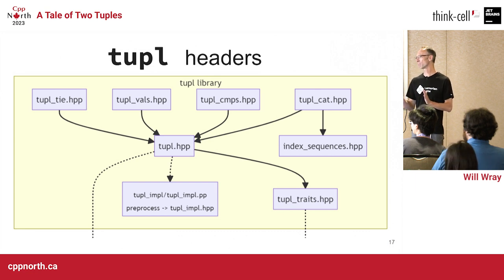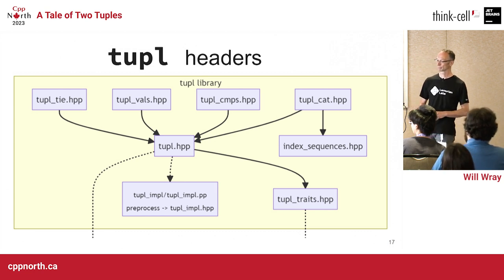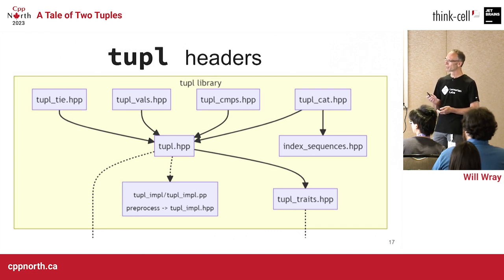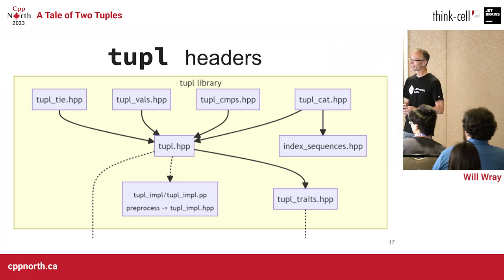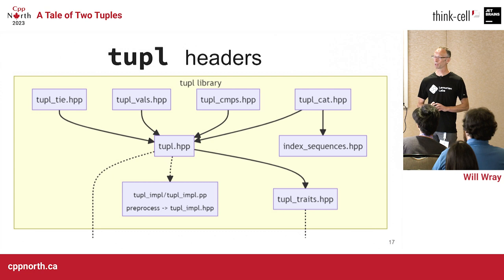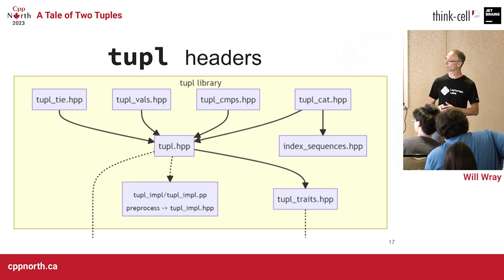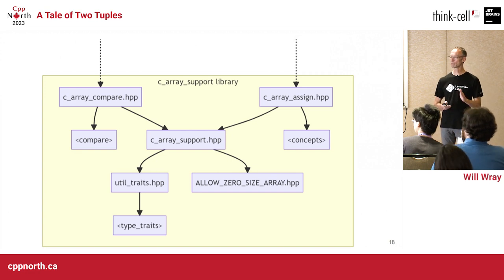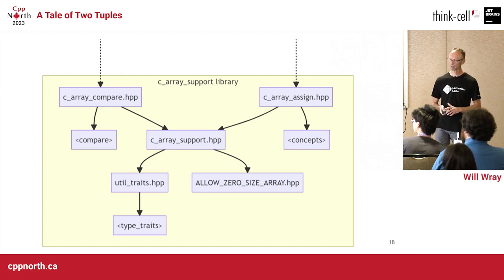Within the library I've kept them all aggregate types with no constructors. There's really only one header, tuple.hpp. The implementation can be configured with different numbers — the library gives up to 16 elements but can be configured by the preprocessor for more. The index sequences header wraps compiler intrinsics, similarly tuple traits wraps traits used by the library. The two dotted lines go down to a sibling library that supports C arrays as first-class types within tuple, for comparison and assignment.